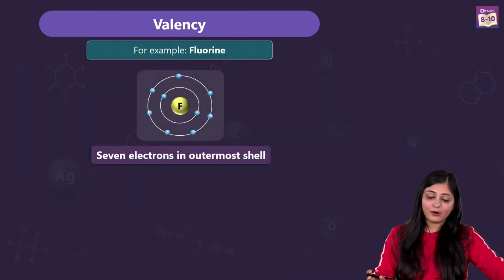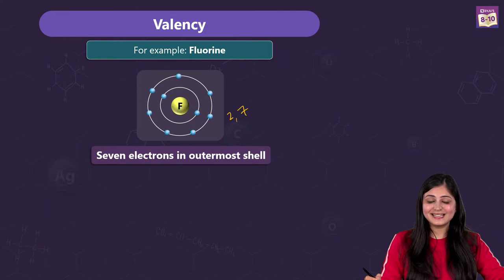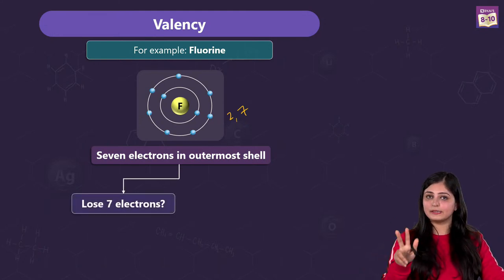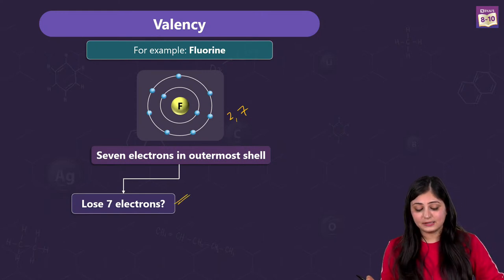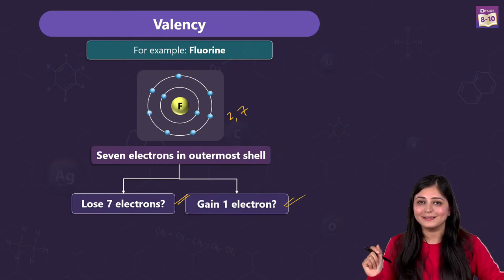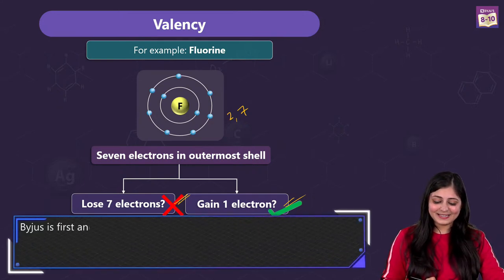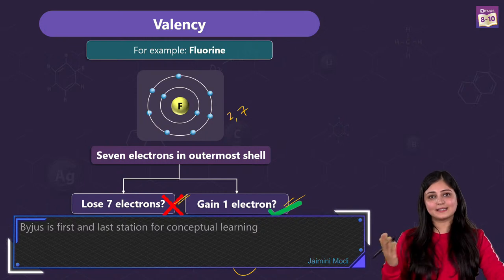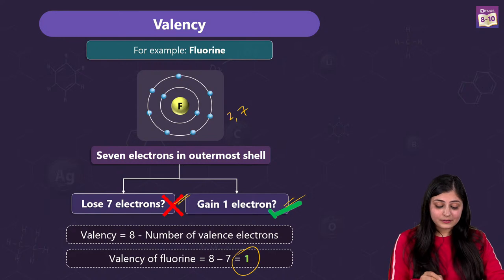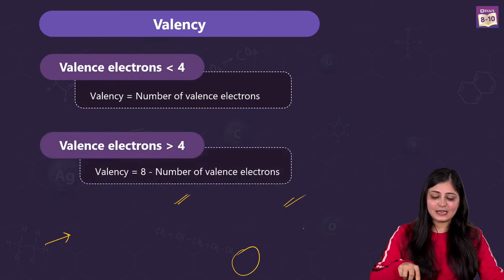Moving on to fluorine — its electronic configuration is 2,7. There are seven valence electrons. Two options: fluorine can lose seven electrons, or it just gains one more. Fluorine prefers smart work over hard work, so it gains one electron — that's easier. So valency is one again because it's gaining one electron to complete the octet. Note that valency here is 8 minus the number of valence electrons, so 8 minus 7 equals 1.